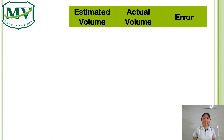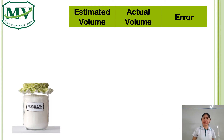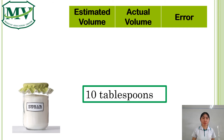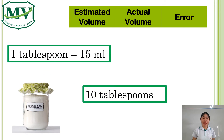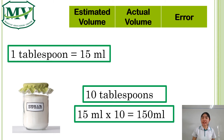This time, let's estimate that there are about 10 tablespoons of sugar in this jar. One tablespoon of sugar is 15 ml, so we have 15 times 10, which is equal to 150 ml.